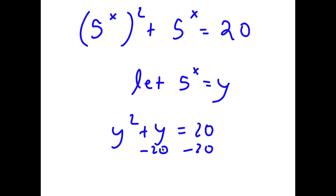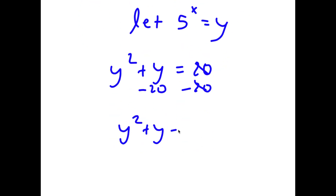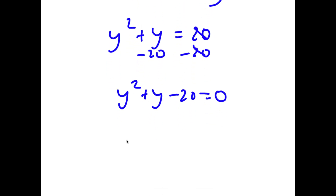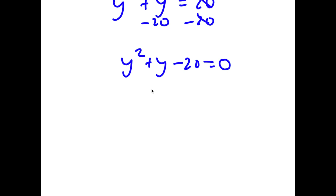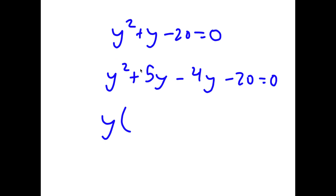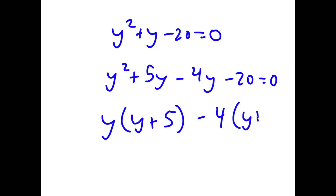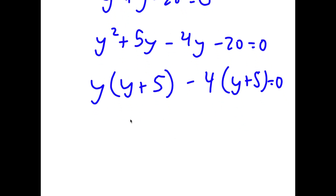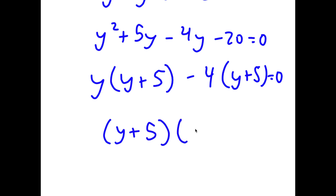Now if I subtract 20 on both sides I get y squared plus y minus 20 is equal to 0. I'm going to rewrite this as y squared plus 5y minus 4y minus 20 is equal to 0. Factoring out from y squared plus 5y gives y times y plus 5, and factoring out negative 4 gives negative 4 times y plus 5 is equal to 0. So now I have y plus 5 times y minus 4 is equal to 0.